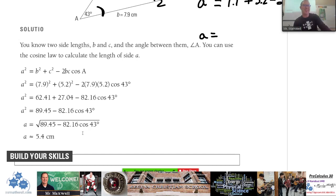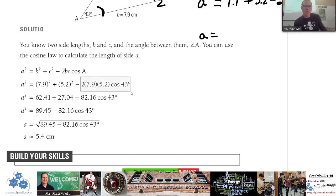Some of you did not take the square root — that's why you got a different answer. Make sure you can get something close to 5.4 centimeters on your calculator. How you type it in matters — a missing bracket gives you the wrong answer. Notice that the 2, 7.9, 5.2, and cos(43°) are all multiplied together, and you're subtracting that whole product from the sum of the squares. You should get about 5.4.